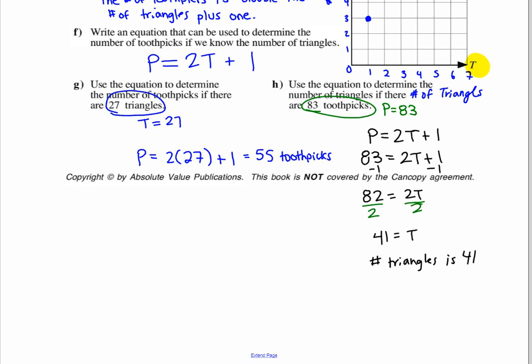Use the equation to determine the number of triangles if there are 83 toothpicks. So, 83 toothpicks would be what variable? P is 83. So, with our equation, our equation was 2T plus 1. We're going to replace P with 83.